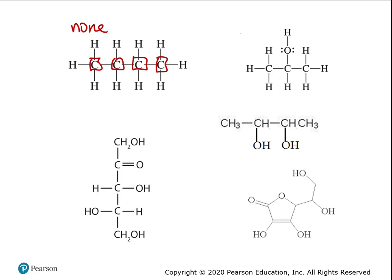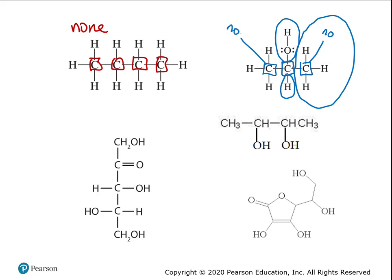Let's look at the one over to the right. The left carbon — is it chiral? No. The far right? No. Now the middle one has only one hydrogen directly connected. Above is an OH, below is a hydrogen — those two are different. But to the left and right you have two CH3 groups — those are the same. So this middle carbon is not chiral because two of the four groups are identical CH3s.